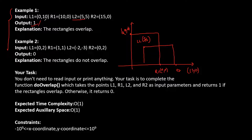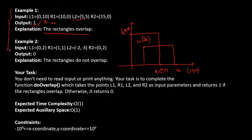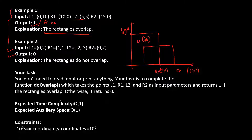So the output would be 1. The explanation says that the rectangles are overlapping, hence the answer is 1. Similarly, we have the second example where the input is L1 (0, 2) and R1 (1, 1), whereas L2 is (-2, -3) and R2 is (0, 2). If you draw the rectangles you will find they are not overlapping, hence the output will be 0 or false. The expected time complexity is O(1) and the auxiliary space is also O(1).